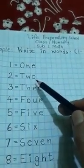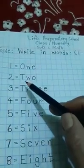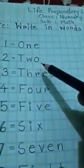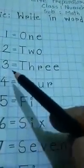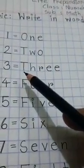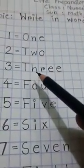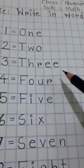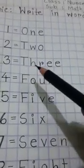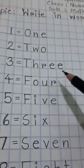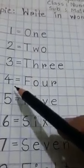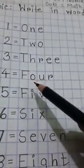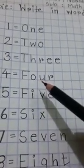Here is two. At first I will write T, then I will write W, then I will write O. This is 'two' — T-W-O, two. Here is three. At first I will write T, then I will write H, then I will write R, then I will write E-E. Three.